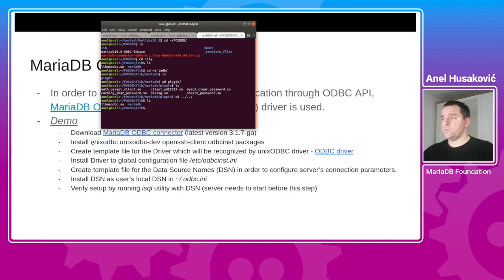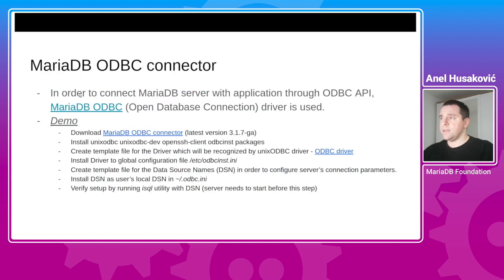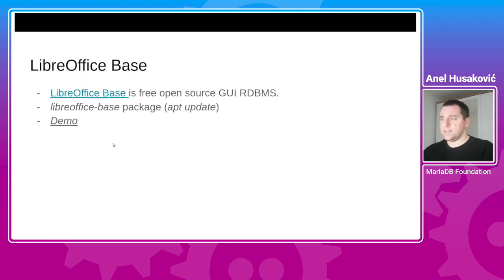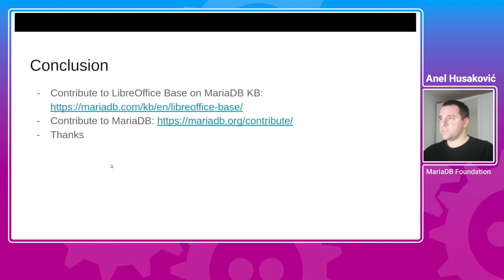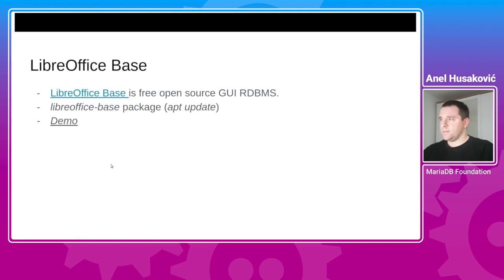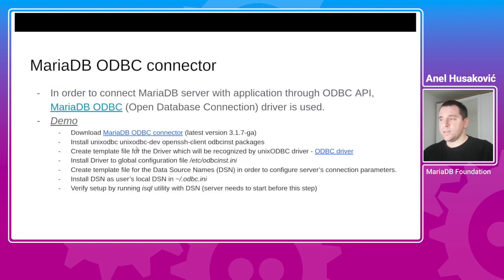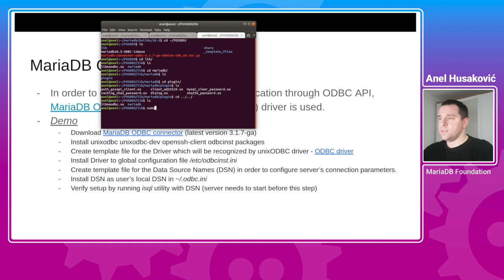After that, we have to install some dependencies: unixodbc, unixodbc-dev, openssh-client, and odbcinst. unixodbc is used as a driver manager; unixodbc-dev has the header files and other binaries needed for the ODBC connection; openssh-client is used for the MariaDB ODBC connection; and odbcinst is used for installing configuration files. Note that if you have git installed, you don't need openssh-client.